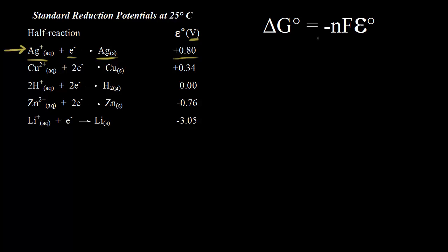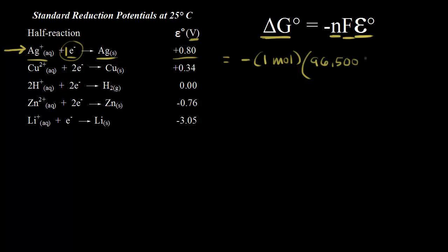From an earlier video, we know that if we have the voltage, we can find the standard change in free energy, delta G zero. So for this half reaction, it would be equal to negative n times F times E°. Remember that n is the number of moles of electrons — here we have one mole. F is Faraday's constant, which is 96,500 coulombs per mole — the charge of one mole of electrons.